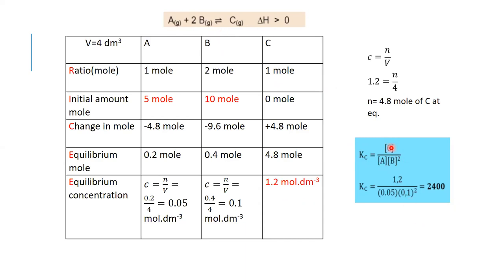Kc = 2400, a very large number, which means there is a large yield of C. The concentration of C is much greater than the concentrations of A and B. This is a large-yield reaction. These are the types of questions you can expect — sometimes Kc is given and you solve for initial moles, change in moles, or equilibrium moles.